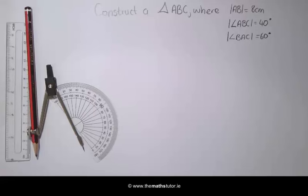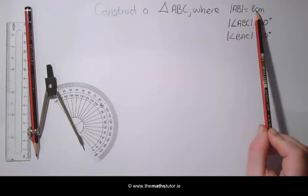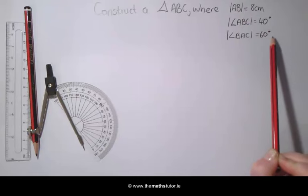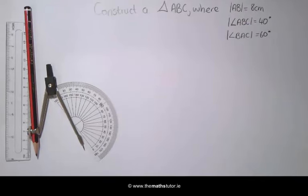We are going to construct a triangle given two angles and the side between these two angles. In this example we are going to construct a triangle ABC where AB is equal to 8 cm, one of our angles is equal to 40 degrees and the other angle is 60 degrees. We start by drawing a rough sketch of our triangle.